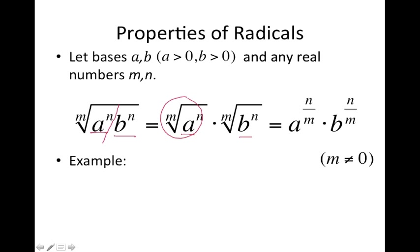And so now we know how to handle something like this, right? We have the exponent inside the radical, so that becomes the numerator. And then we have this m, which is telling us which root it is, and that becomes the denominator.